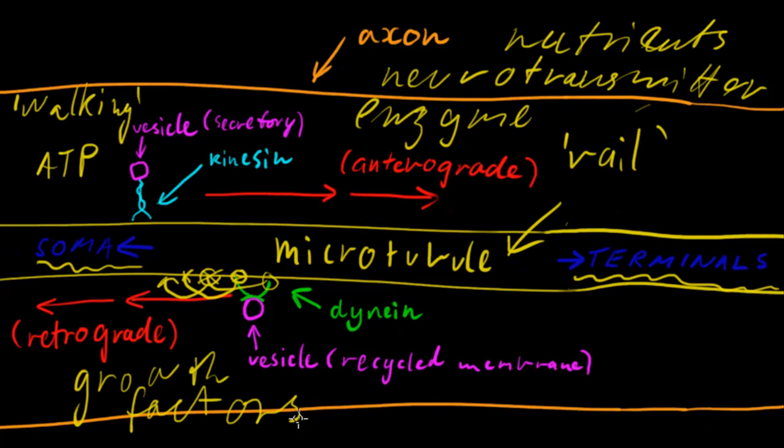But an important note here that harmful agents, pathogens can invade the central nervous system by retrograde transport. For example, the polio viruses, the herpes simplex, rabies, there's a whole bunch. And so that's something to keep in mind, perhaps interesting.